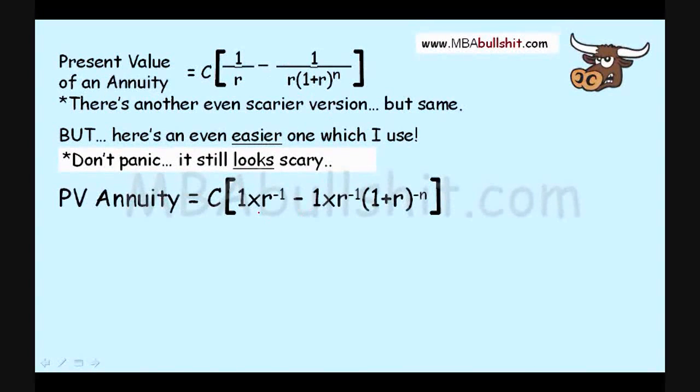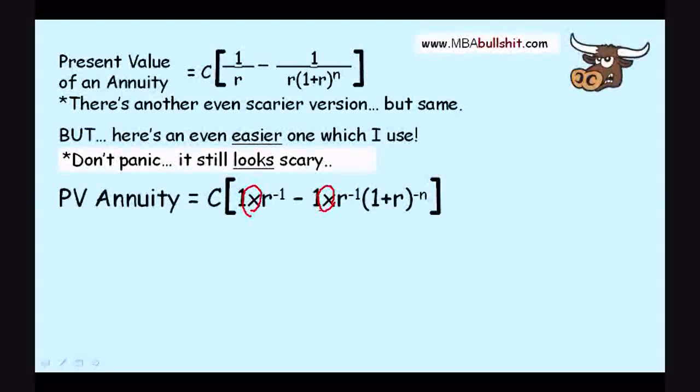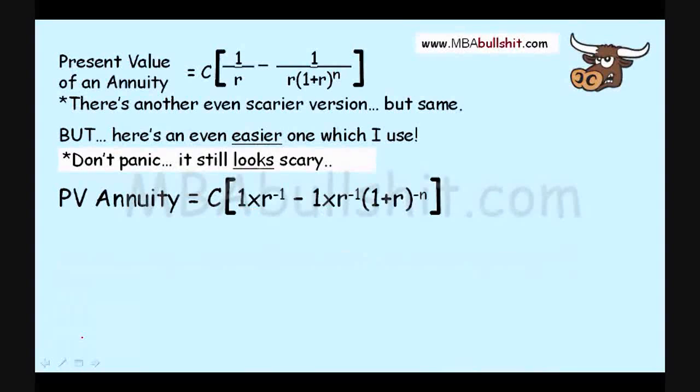Now, the first thing I want you to remember is that this x over here and this x over here means multiplication. It is not a variable. It is not the variable x. It just means one times r or one multiplied by r. Same thing here. It means one multiplied by r. So, if we do that, if we use this formula, it becomes easy as pi and let me show you.